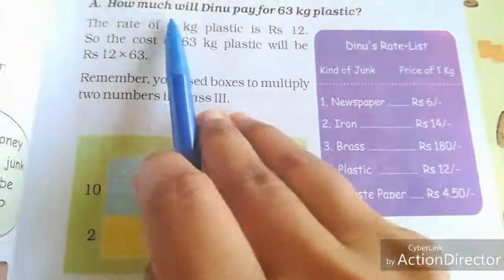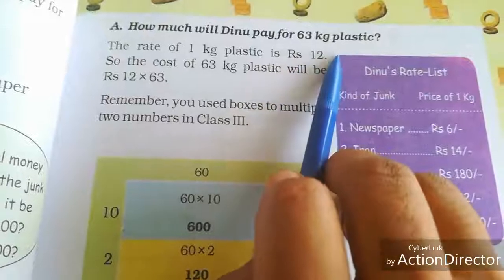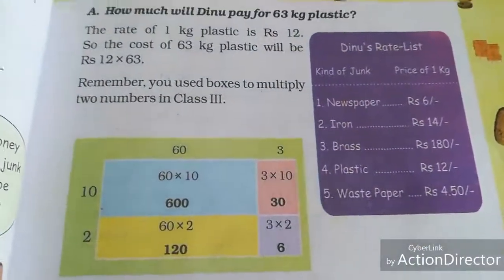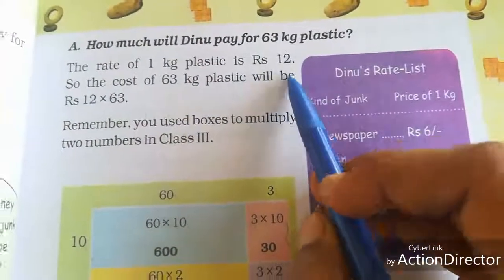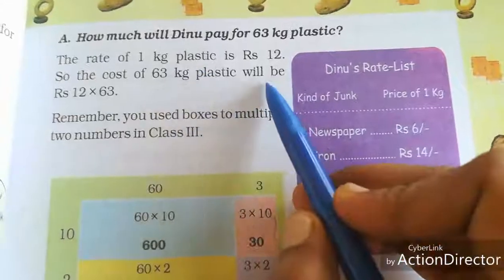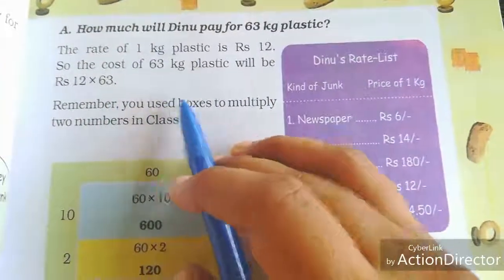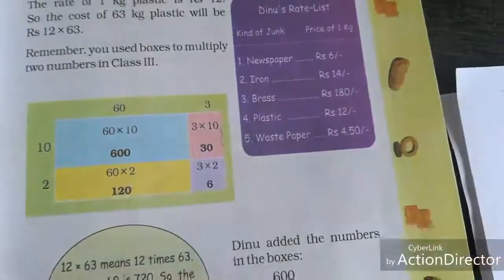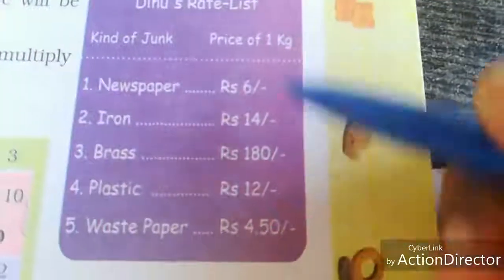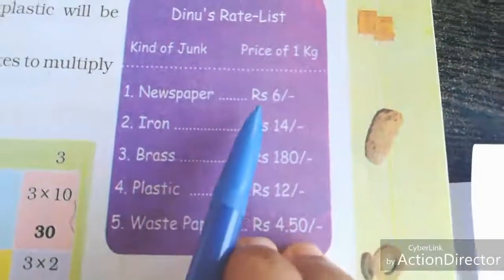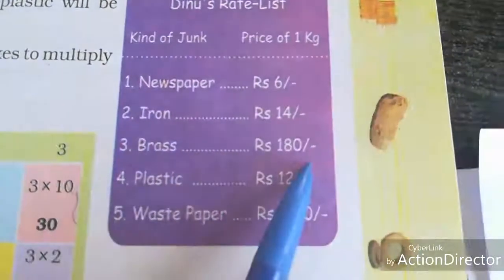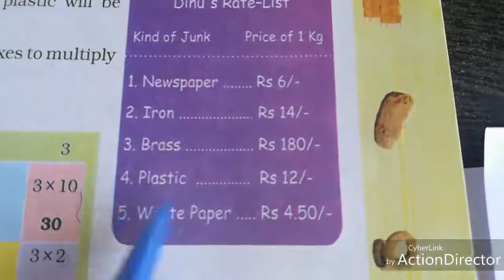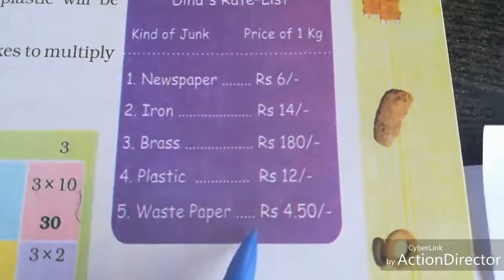Look here. How much will Dino's pay for 63 kg plastic? The rate of 1 kg plastic is Rs. 12. So the cost of 63 kg plastic will be 12 into 63. This is Dino's rate list: newspaper 1 kg is Rs. 6, iron Rs. 40, brass Rs. 180, plastic Rs. 12, waste paper Rs. 4.